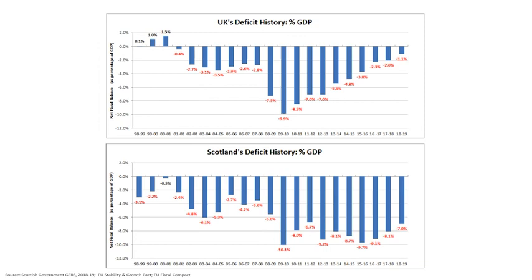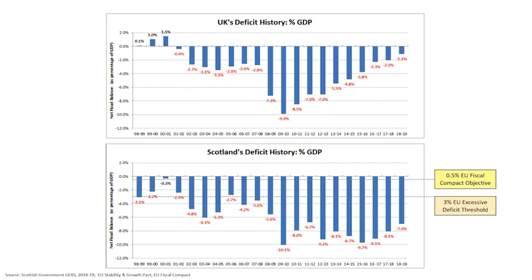In terms of the scale of Scotland's deficit challenge, it's worth saying the 3% EU excessive deficit threshold is often mentioned. What's mentioned less often is the 0.5% EU fiscal compact, which is what's actually targeted through the economic cycle. As Ronnie may come on to discuss in terms of launching your own currency, you probably need to be thinking about getting into a surplus. But remember, the UK isn't working for Scotland — that's the nationalist narrative, and that's what we need to reverse.